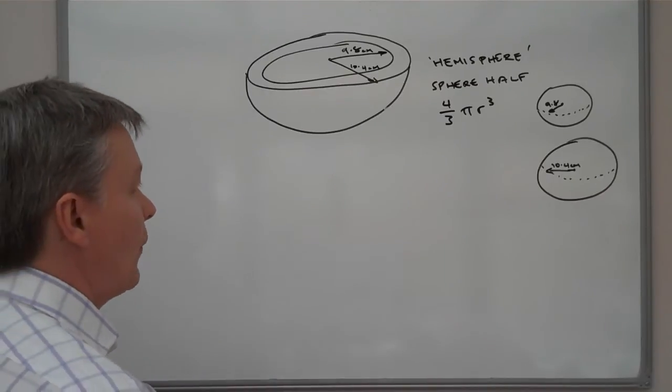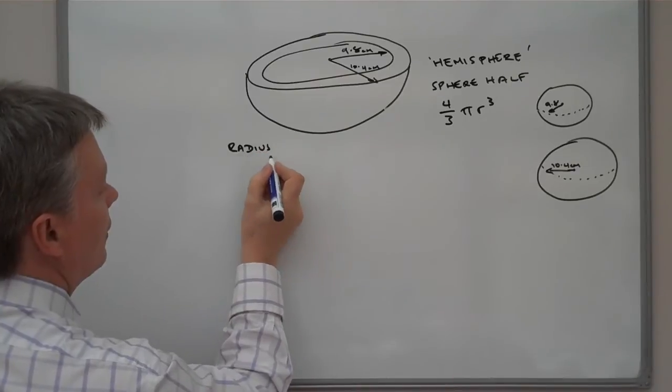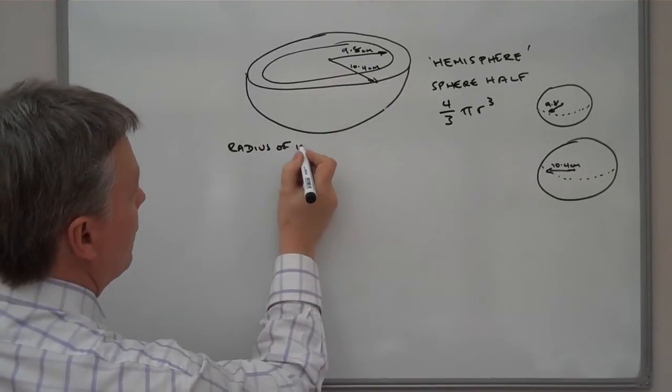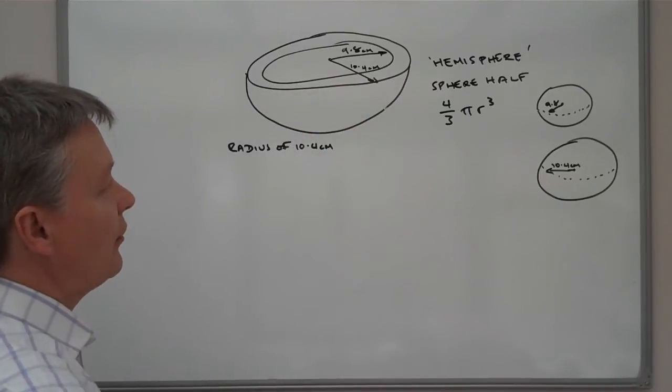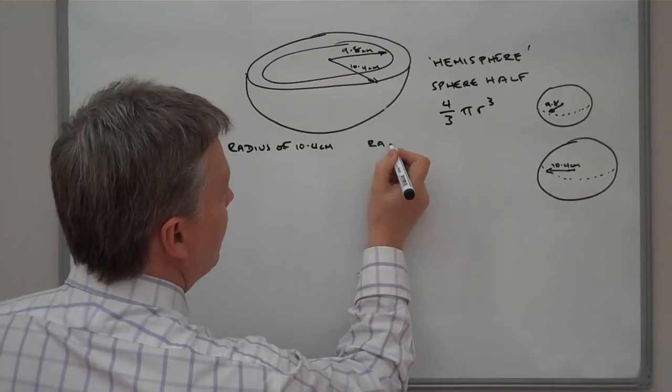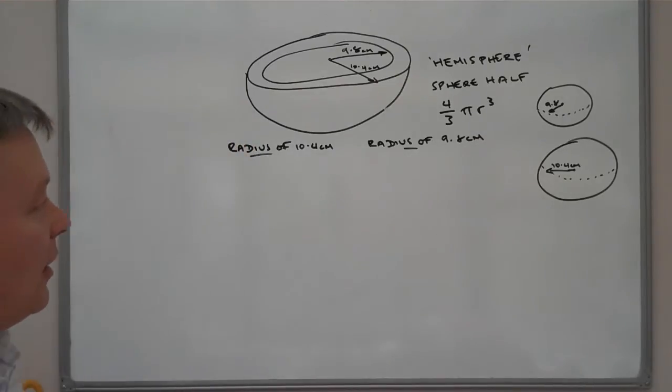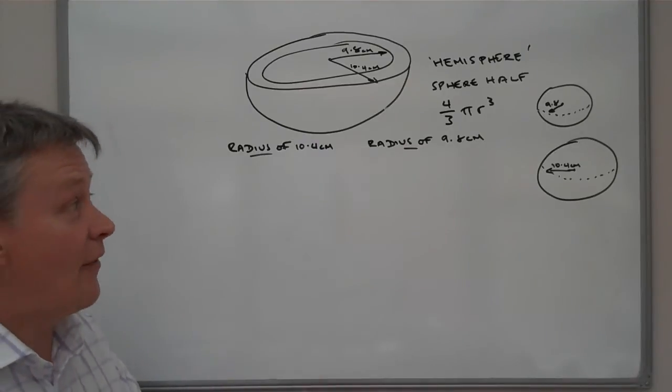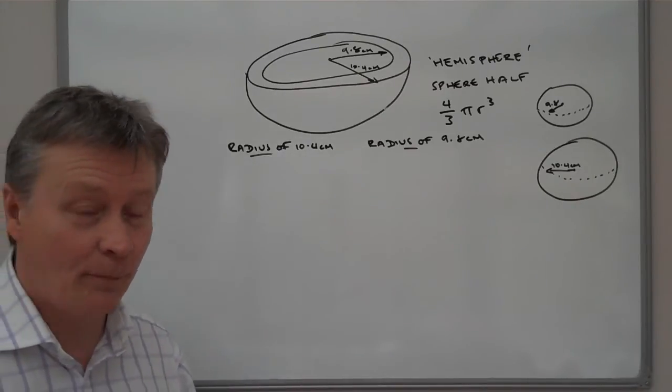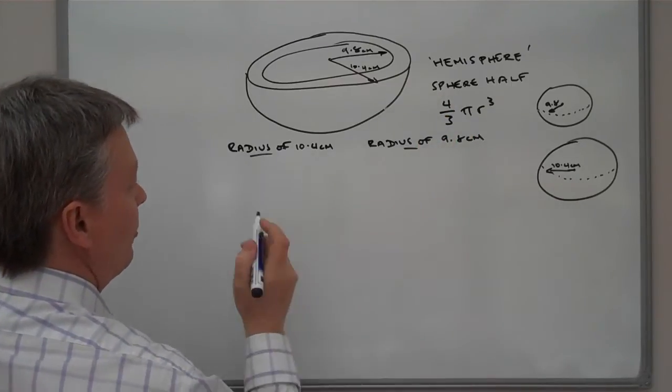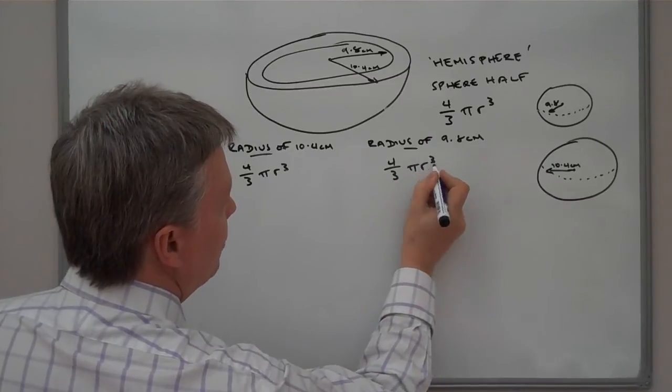It should be fairly straightforward, providing you put your numbers in correctly and you use a fairly structured approach to it. So I'm going to look initially at this side of my answer paper at a radius of 10.4 centimeters. This side I'm going to use a radius of 9.8 centimeters. I'm going to work down the page and actually work the two together because then I can only just change a couple of figures on my calculator to be able to work out the calculations each time. So the first thing I'm going to do is put the formula I'm going to use, which is 4 thirds pi r cubed and 4 thirds pi r cubed.